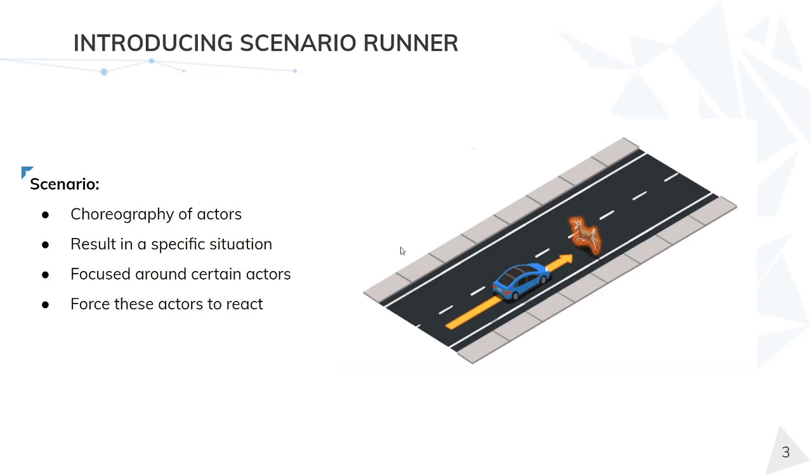For example, in the image on the right, here we can see a deer which is crossing the road and a blue vehicle which is forced to brake to avoid colliding with it.